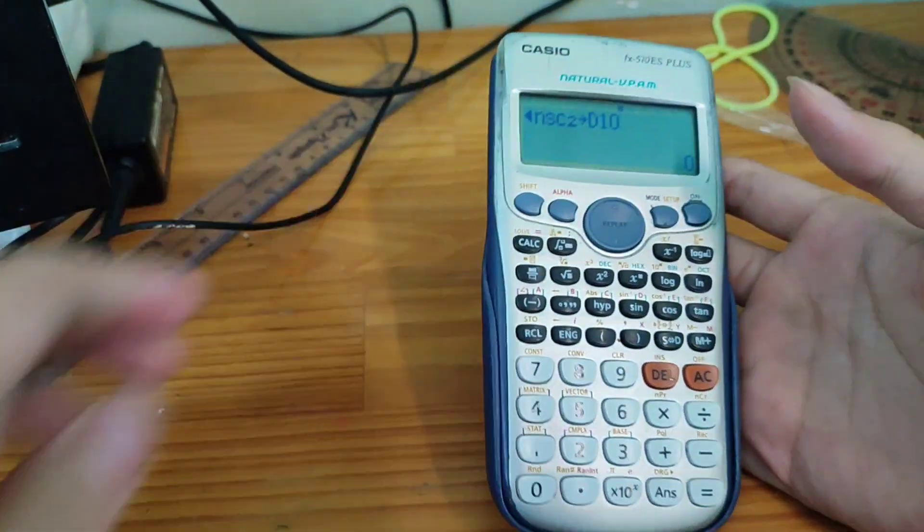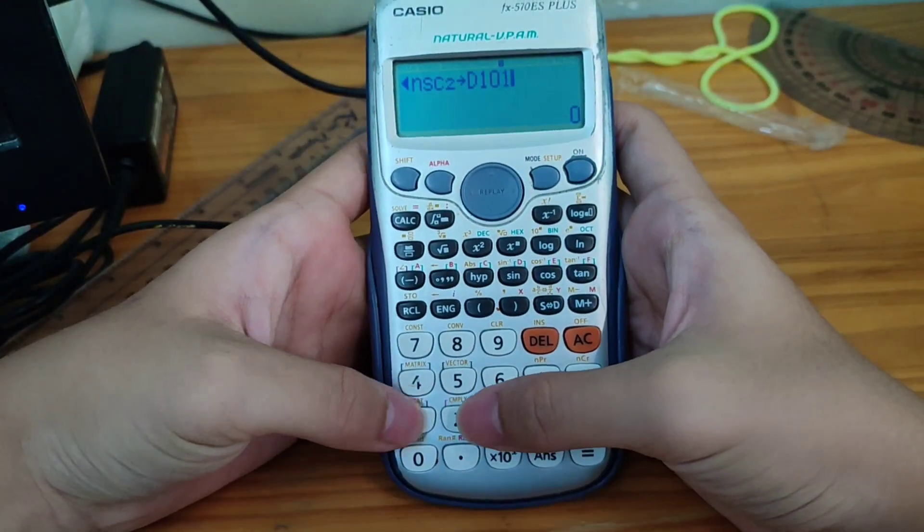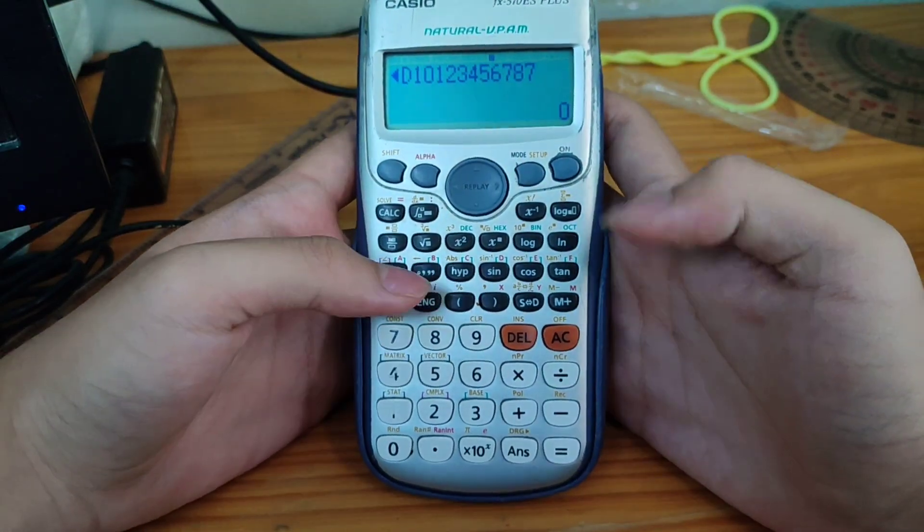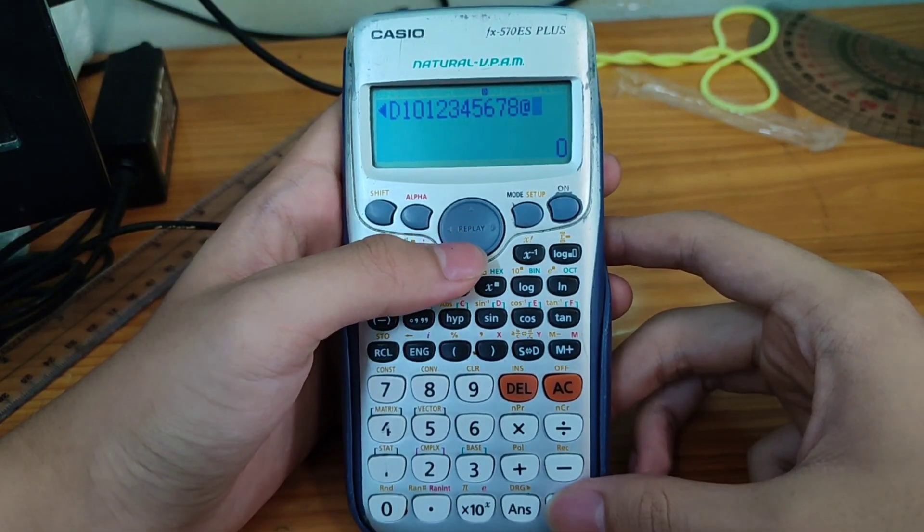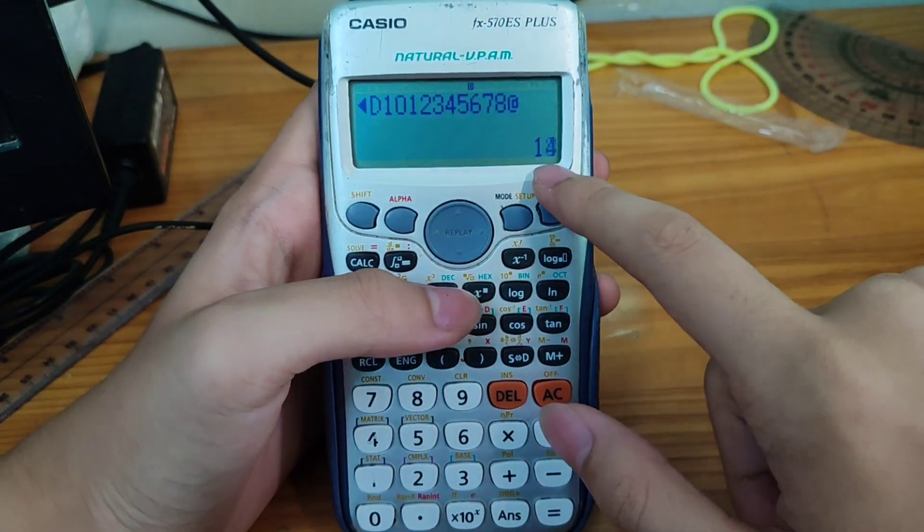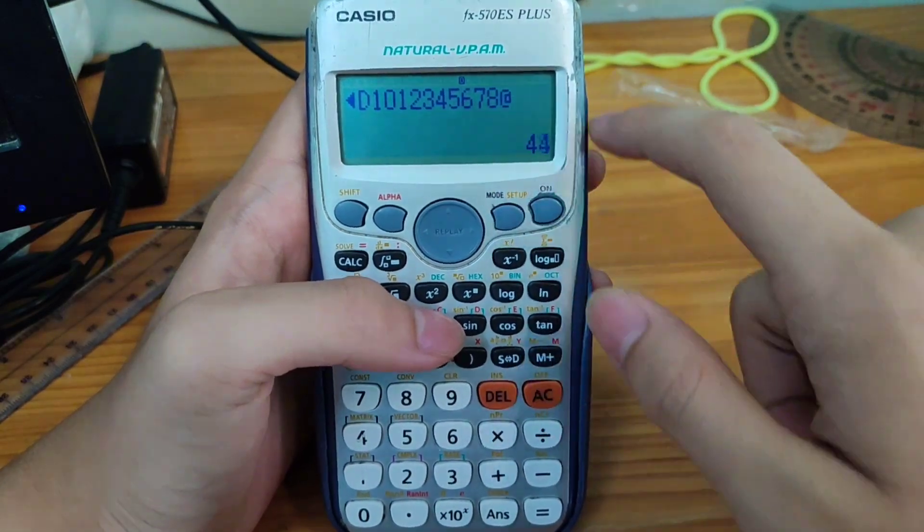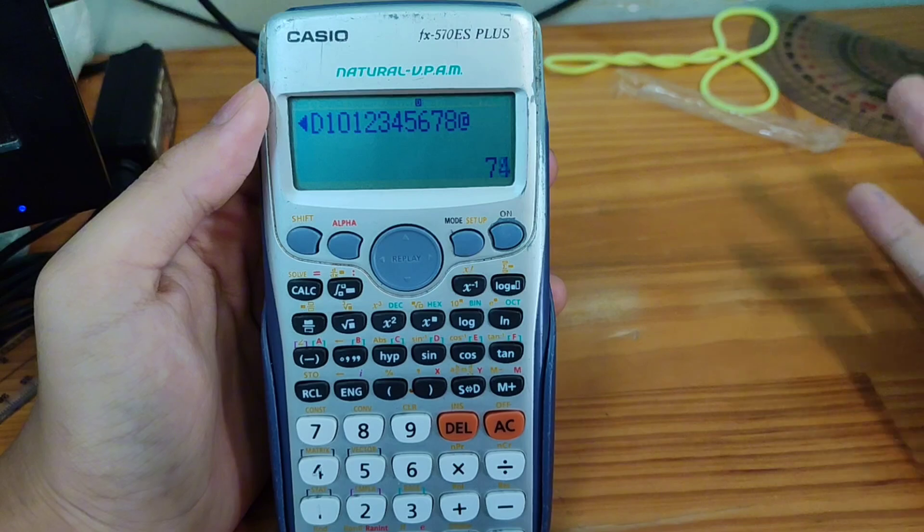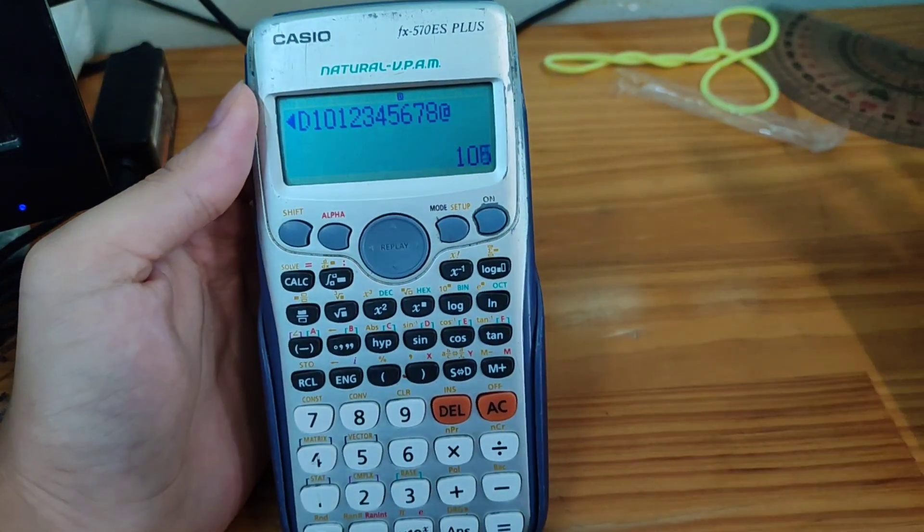When you are done taping the hack string, you will tap 1, 2, 3, 4, 5, 6, 7, 8, 7, and press AC. Go left and equal. You will see, there. This is the timer. You will activate the timer in this calculator. Pretty cool, right?